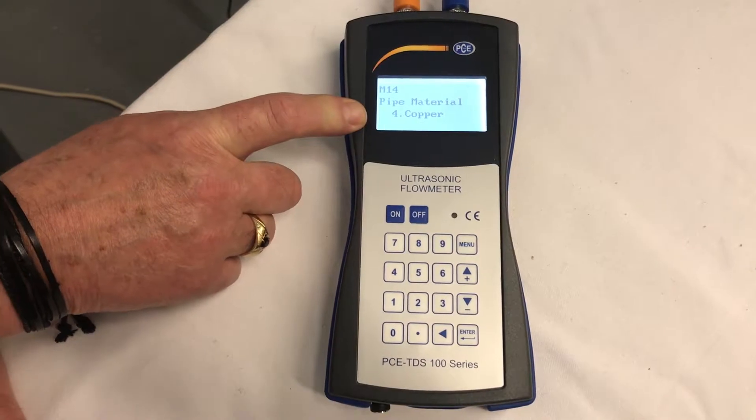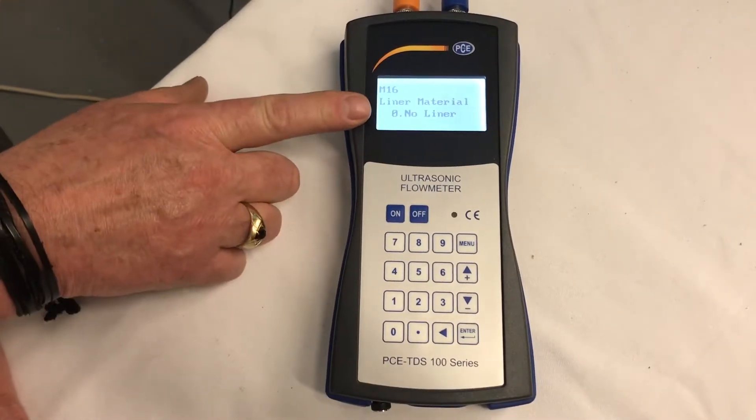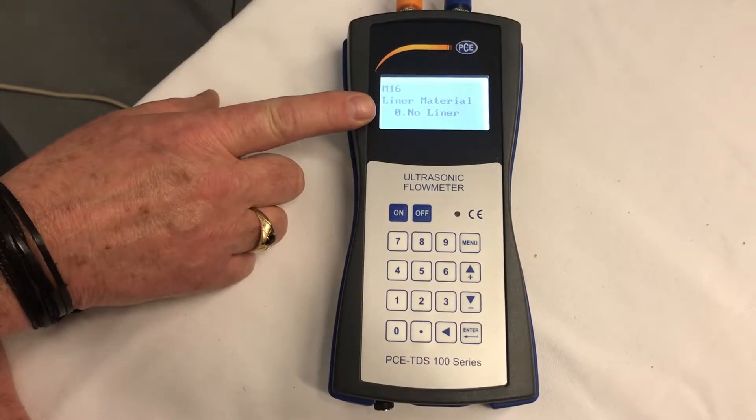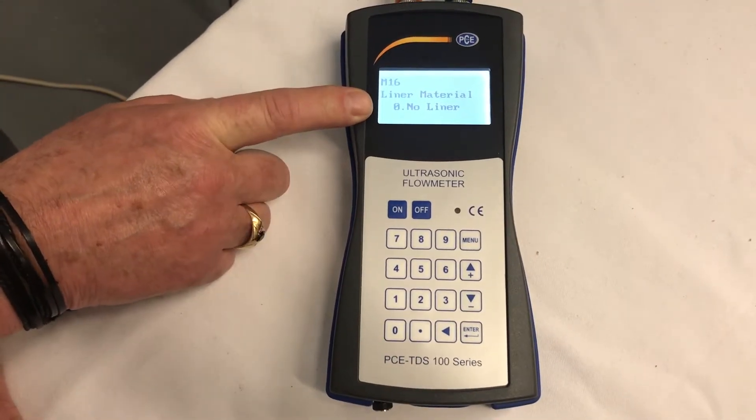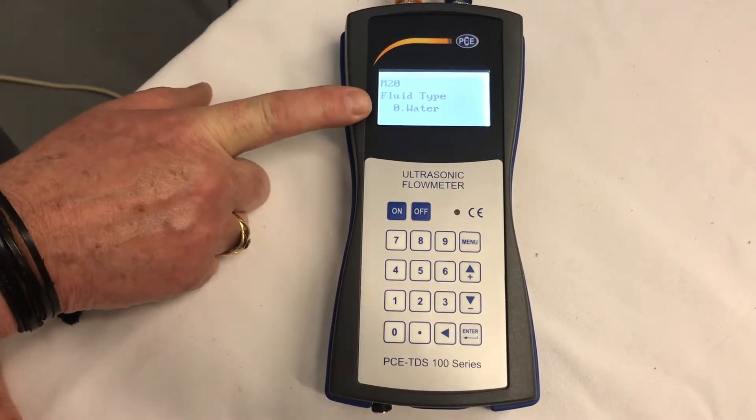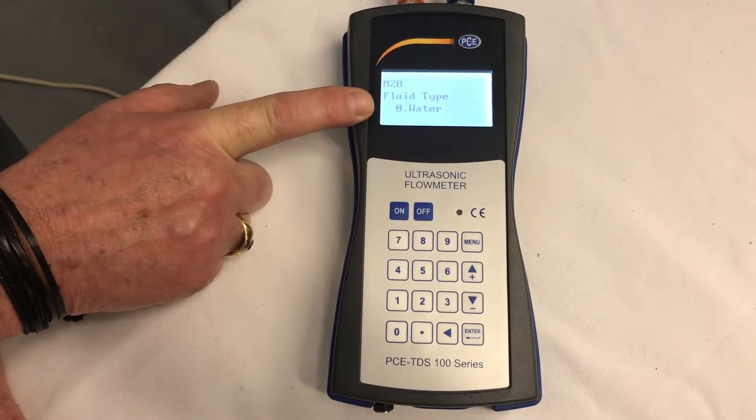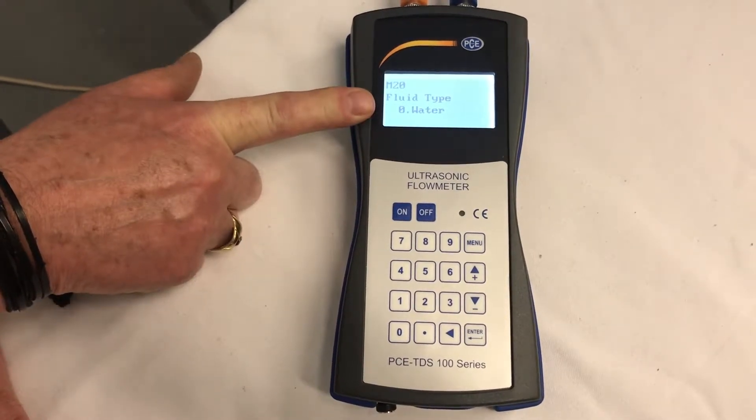Now we're going to go to M-16, which is liner. There is no liner in the copper pipe. Then we go to the liquid, M-20. We have water flowing through our pipes or our tubes, copper tube. So we want to make sure it says zero for water.